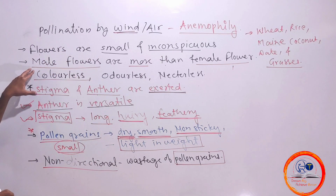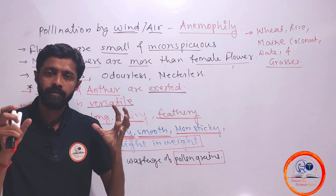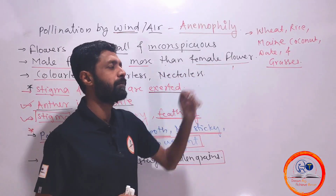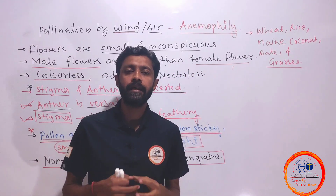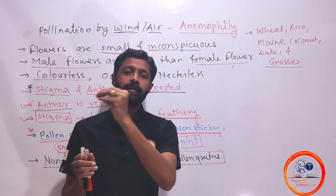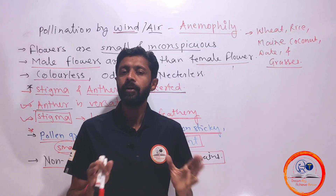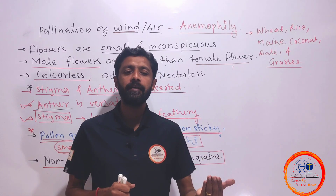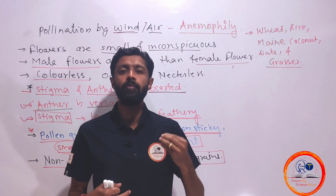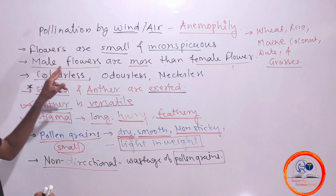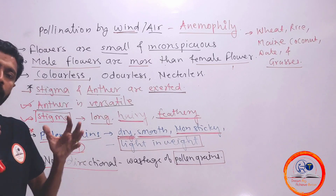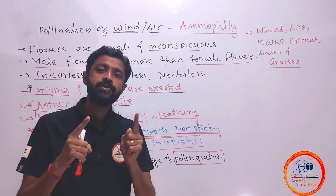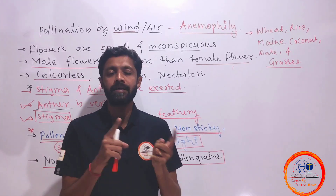Second, if a flower is unisexual, a greater number of male flowers should be present compared to female flowers, because anemophily is a hit-or-miss kind of affair. In the case of bisexual flowers, the flower must possess more stamens compared to carpels.